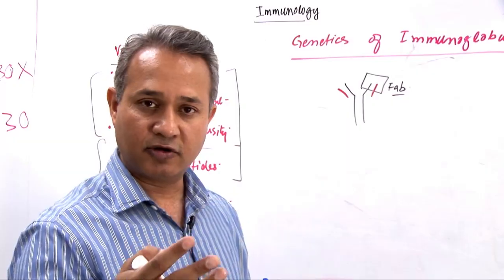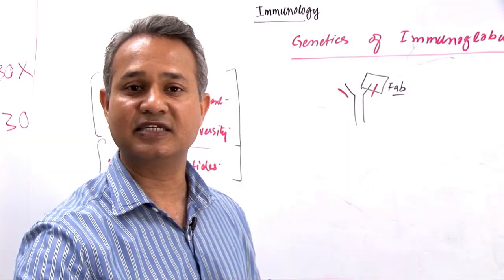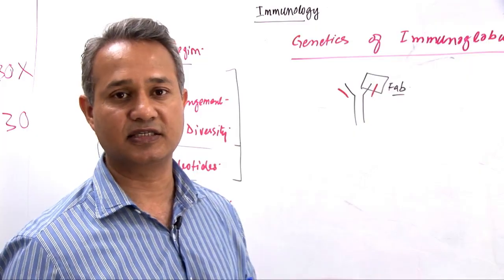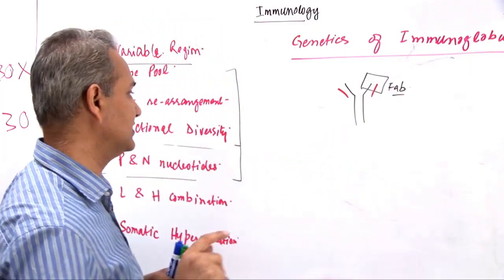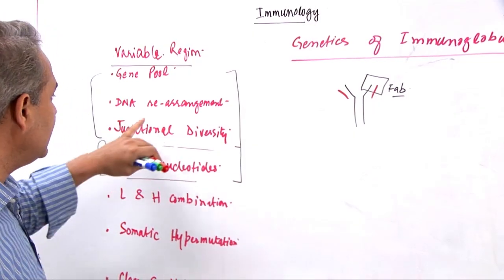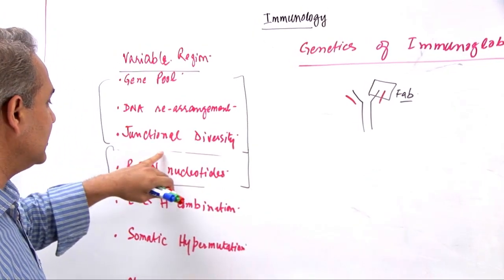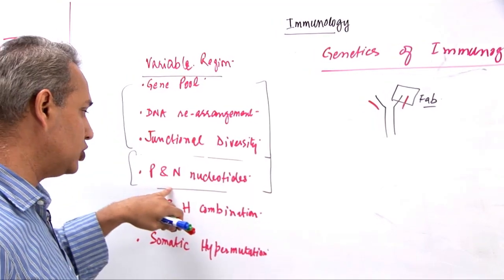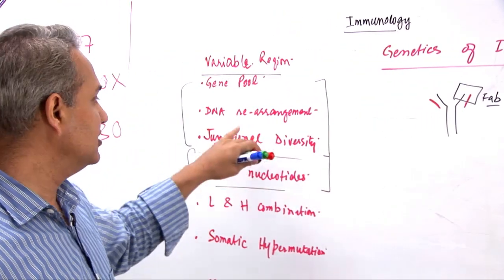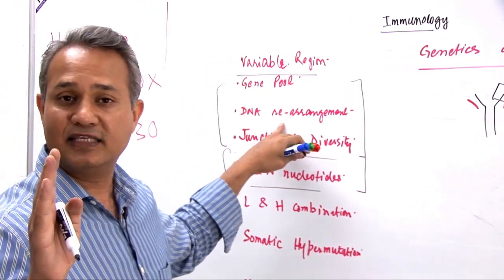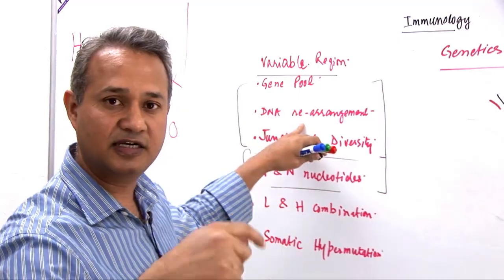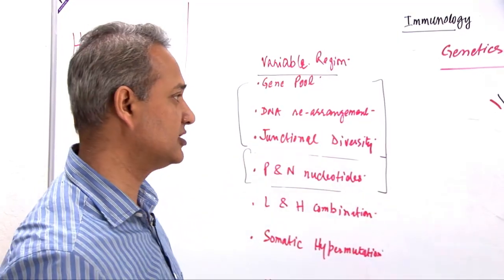If you have one million B cells, that means a million different cells express a million different kinds of antigen binding sites. One B cell only makes one kind of antigen binding site. Having said that, let us talk about how DNA rearrangement occurs. In the same concept we will also talk about junctional diversity, P and N nucleotides. This is the most important concept here, and it is not related to class switching — this is antigen binding site variation.